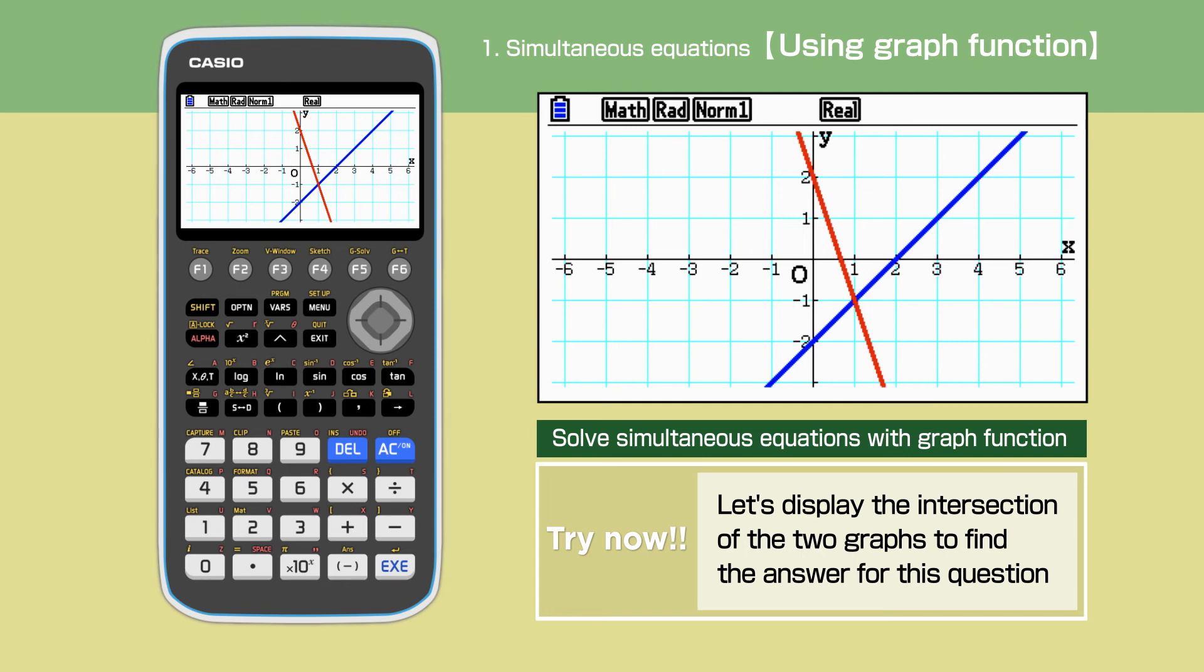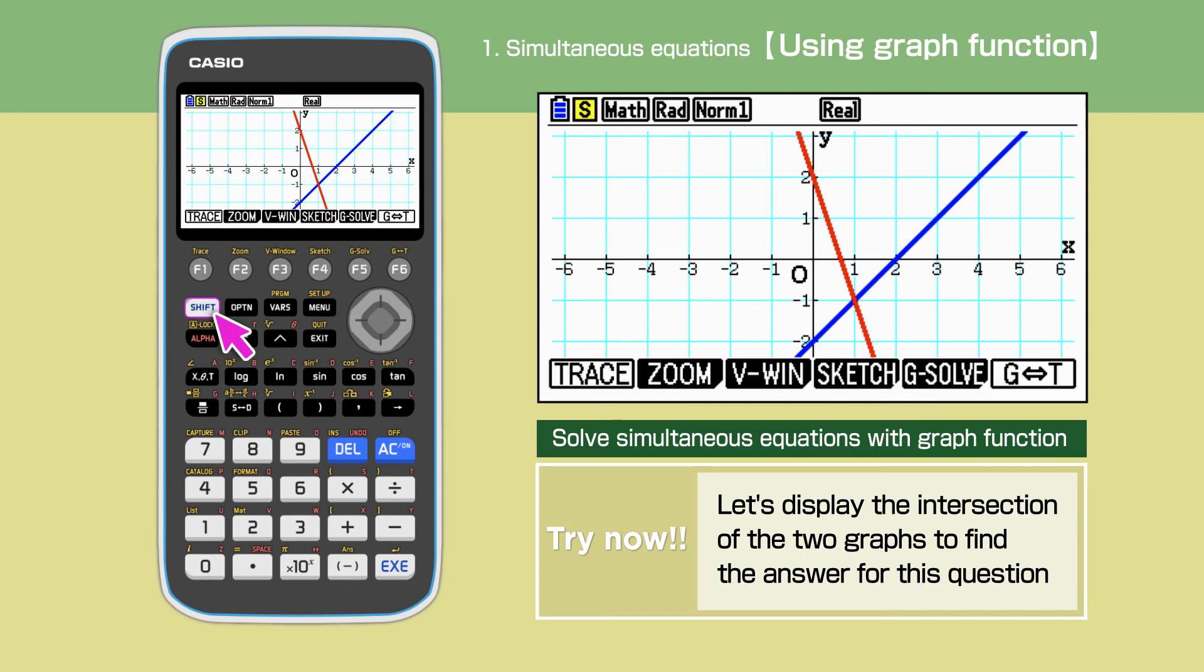In order to find its coordinate, we first need to press Shift to display the command menu. Press F5 to choose G solve, then press F5 again to select Intersect.